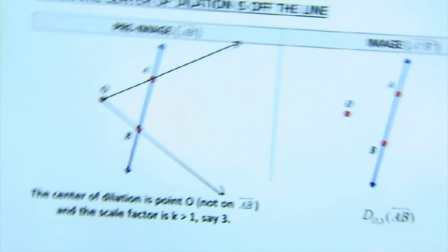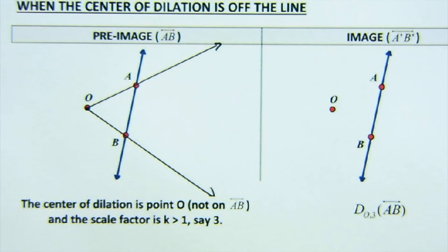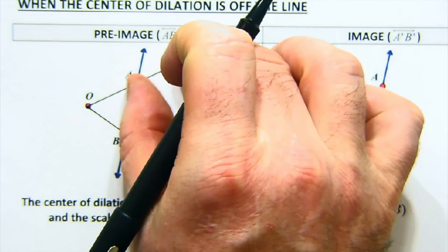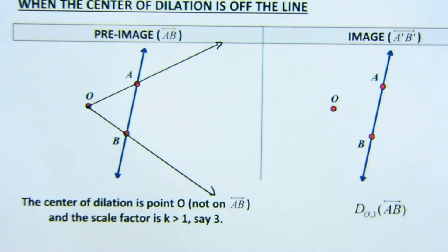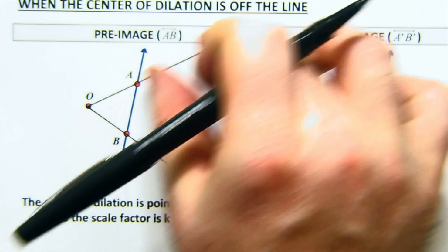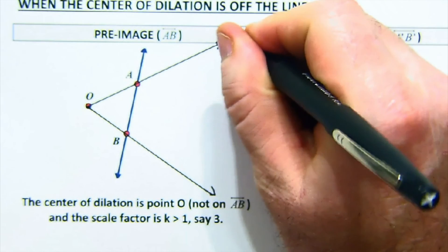So the idea is when you have a dilation, it's always about from the center dilating upon that ray. And so if you're going to dilate by a scale factor of three in this case, the idea is that you would do three of those.